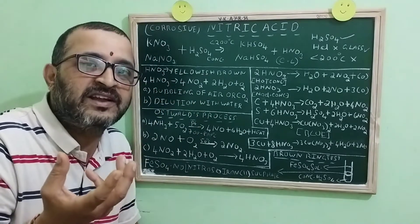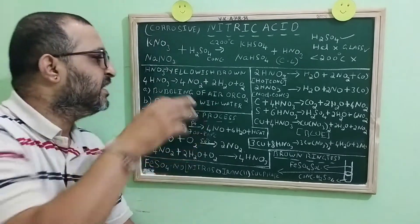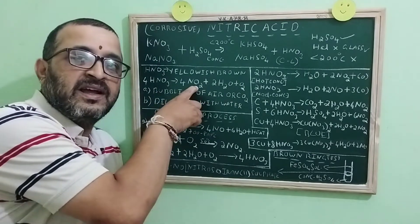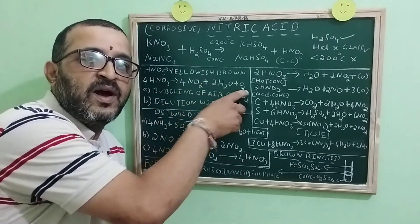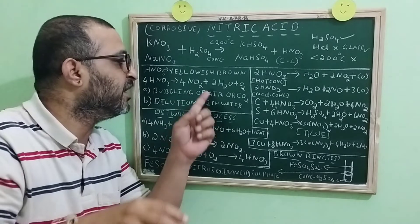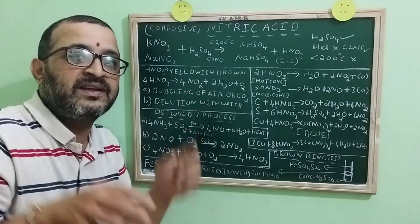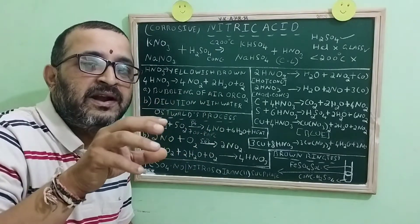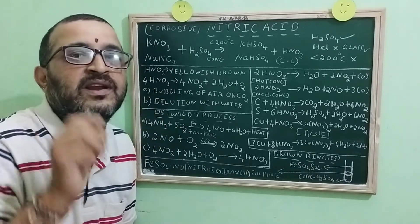Where do we get this nitrogen dioxide? See, nitric acid decomposes to produce nitrogen dioxide, water and oxygen. Because of this nitrogen dioxide, nitric acid available in the laboratory appears yellowish brown in color.